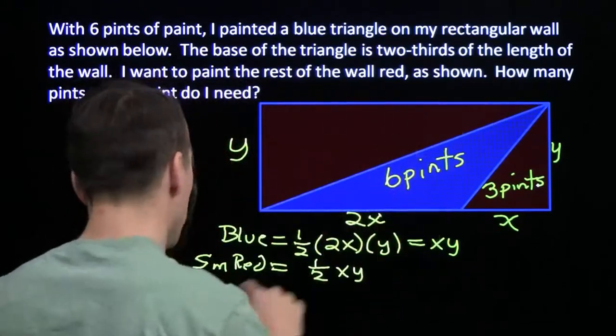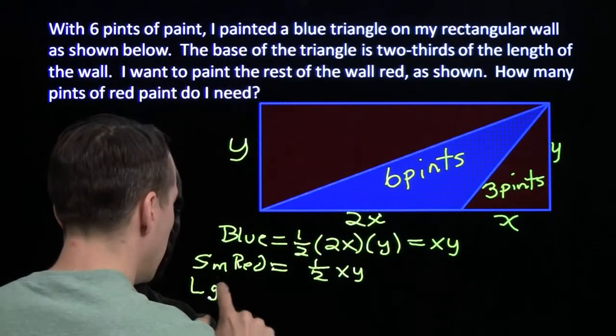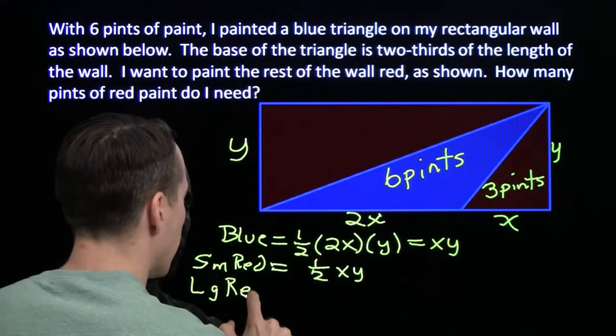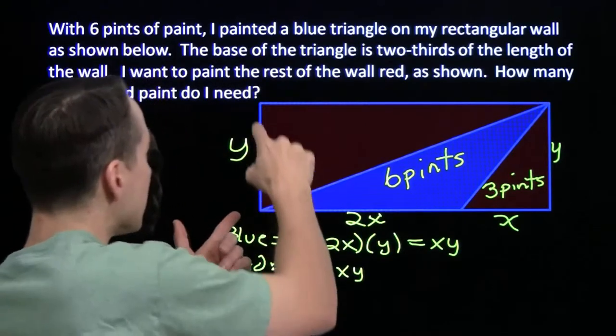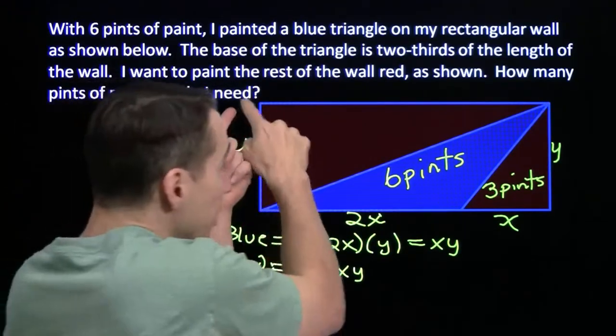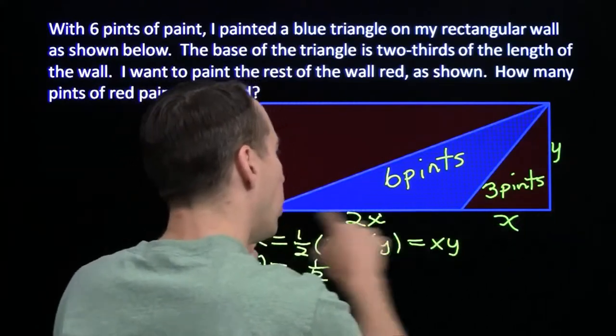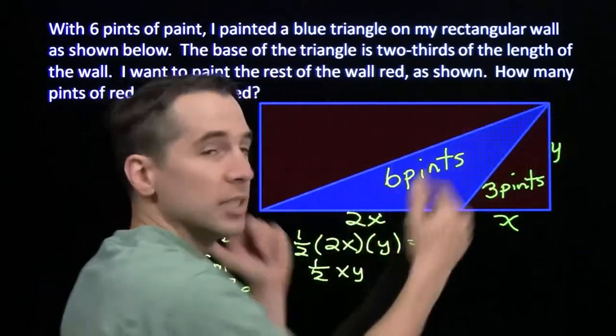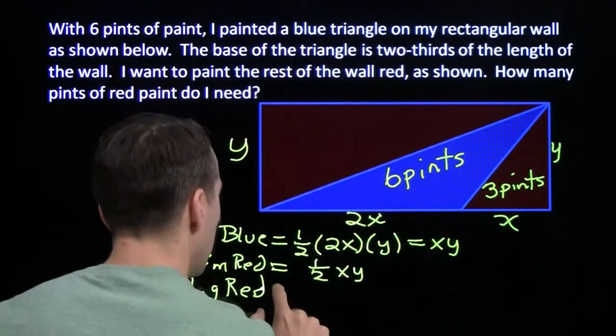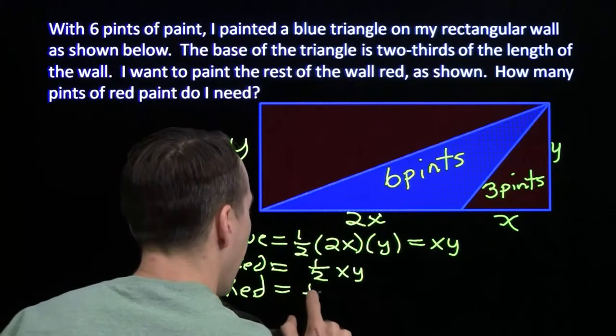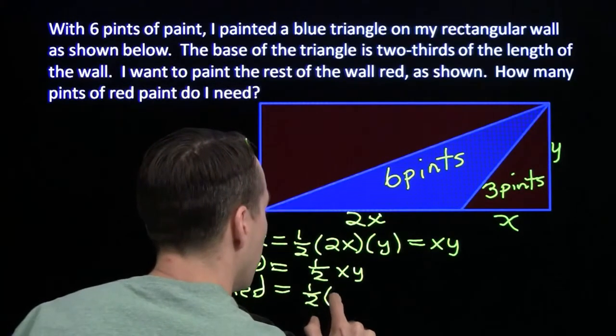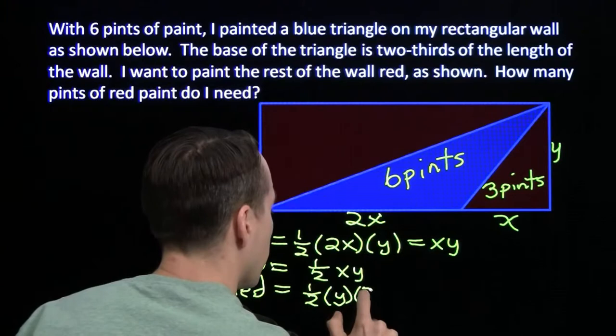Now we move on to the large red triangle. That's also a right triangle. And we know the lengths of its legs. This one's y. And this one is the same as this whole length. The bottom of the wall is the same as the top of the wall, so that's 3x.